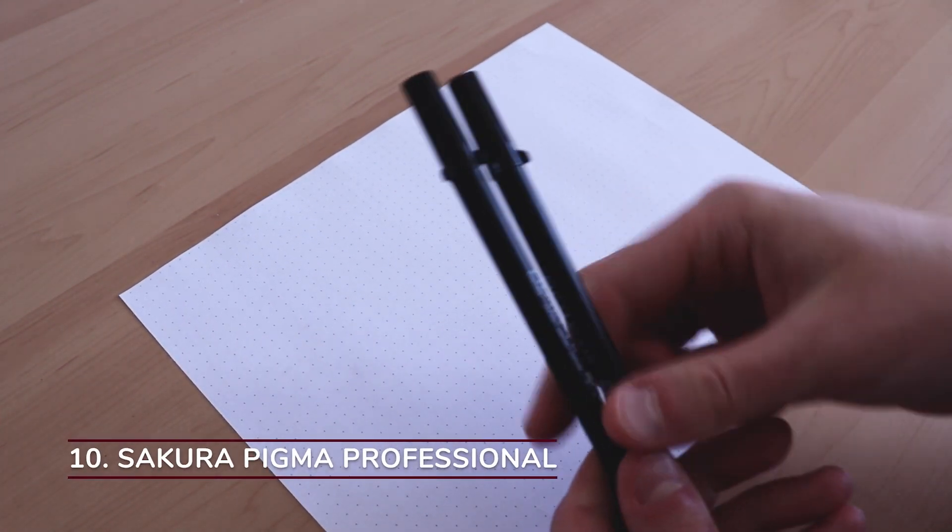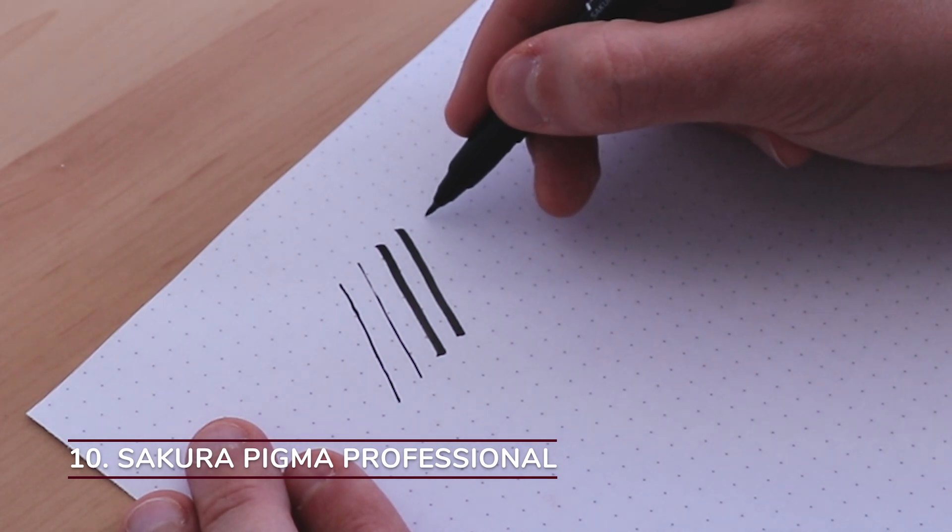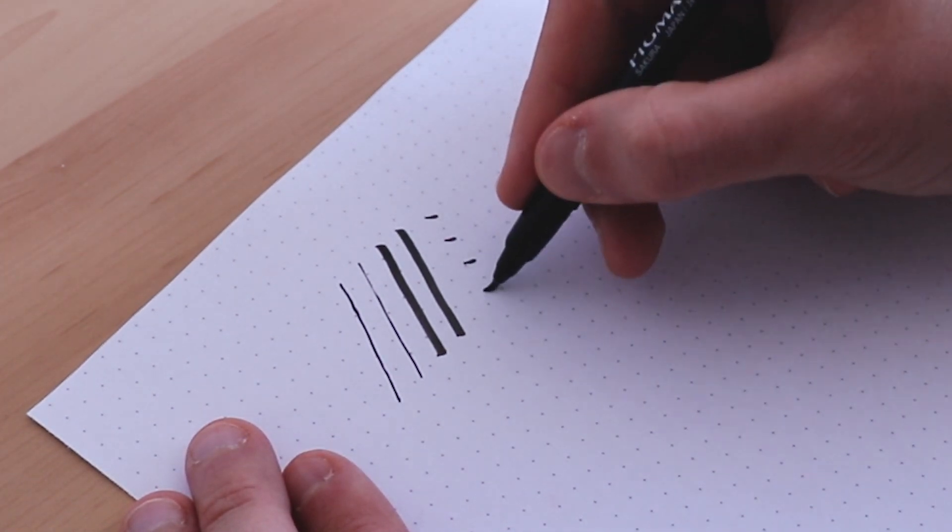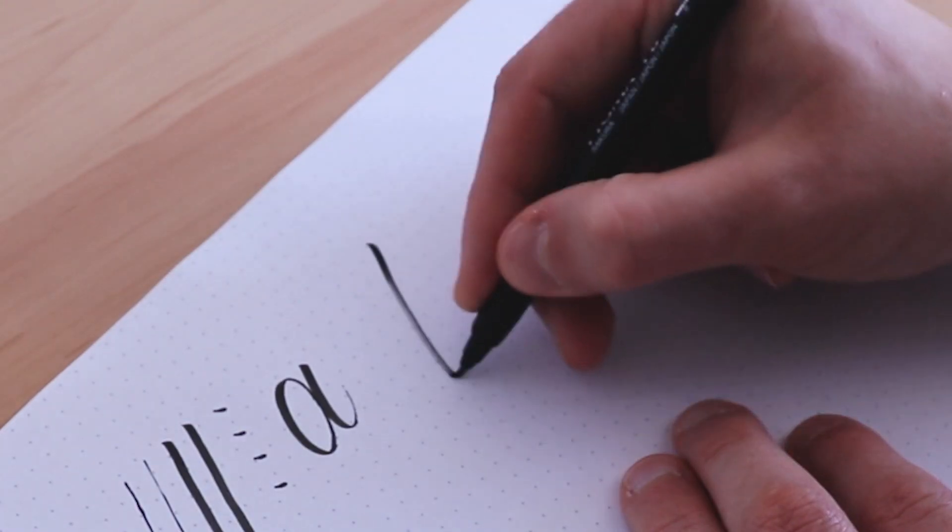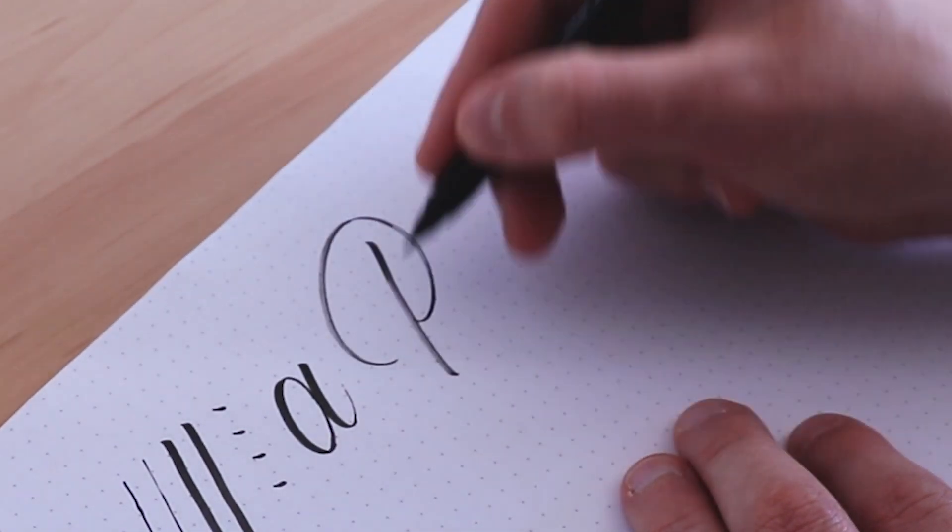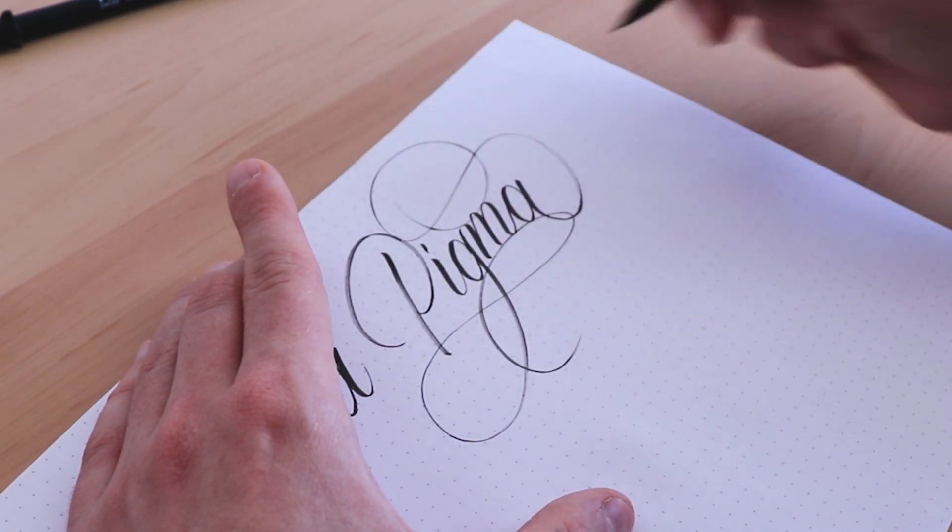The last on our list is the Sakura Pigma Professional. It comes in three different sizes small, medium and bold. Unfortunately I only have the small and medium size. The nib elasticity is quite soft. The ink flow is medium. As for the colors it only comes in black.